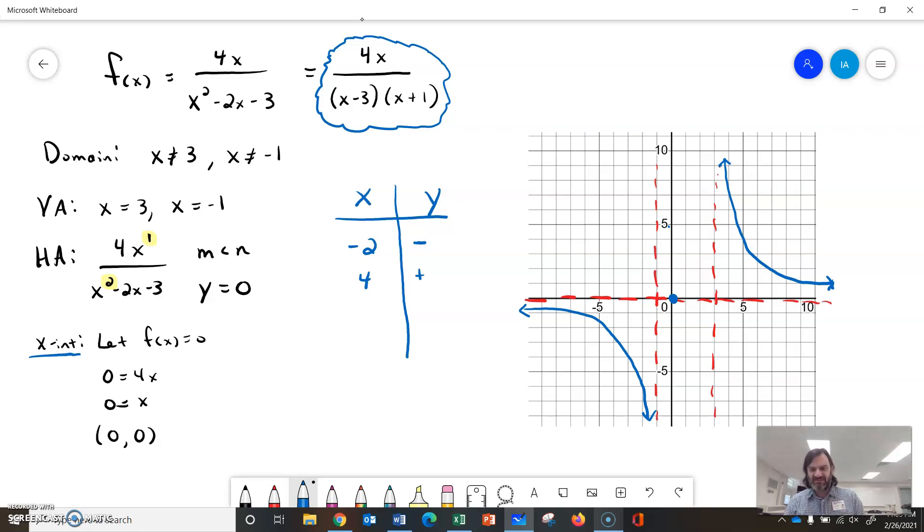In the middle area, I need to know what's happening between 0 and 3, so maybe I'll try 1. If I plug in 1, I get positive over negative times positive, so positive over negative gives negative. So to the right of 0 all the way up to 3, it's going down.